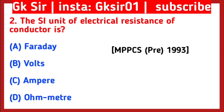Question number 2. The SI unit of electrical resistance of a conductor is. Your options are: option A, Faraday; option B, Volts; option C, Ampere; option D, Ohmmeter.